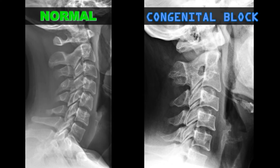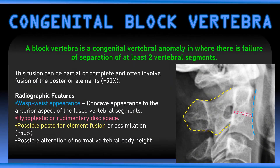Let's look at a normal lateral cervical view on the left and then one with a congenital block on the right. If we look at the C2-C3 segment on the right side with the congenital block, there's a hypoplastic disc and posterior element fusion — this is a classic appearance of a congenital block versus a normal segment. A block vertebra is a congenital vertebral anomaly where there's failure of separation of at least two vertebral segments. This fusion can be partial or complete; sometimes the posterior elements are involved and sometimes they're not fused.